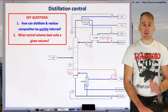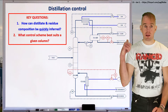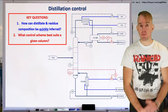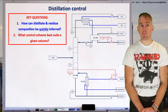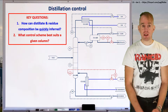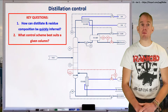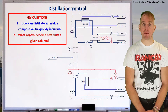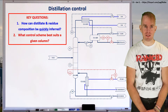In this part of this lecture, I want to try and answer these two questions on the whiteboard. How can distillate and residue composition be quickly inferred? And what control scheme best suits a given column for its operation? Here on the whiteboard there's a sketch diagram of one particular column control configuration that we're going to be talking about at a later point in this part of this lecture.